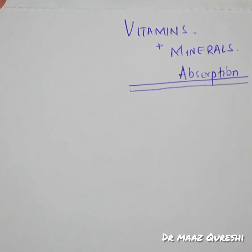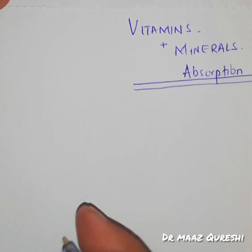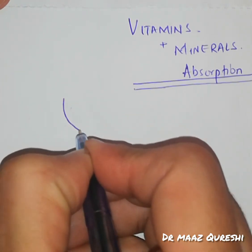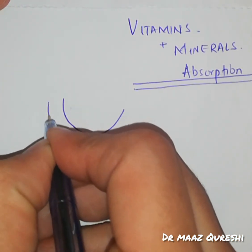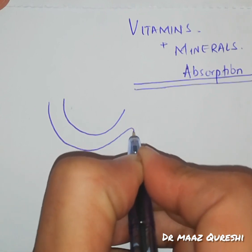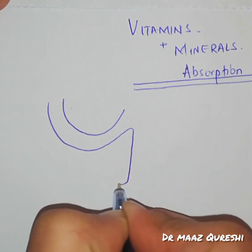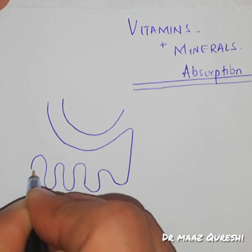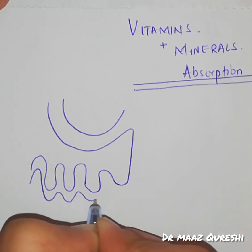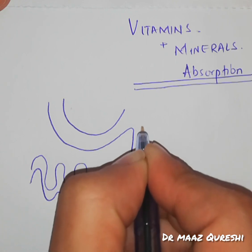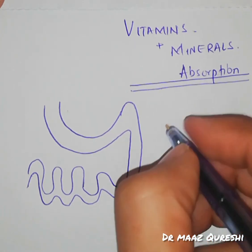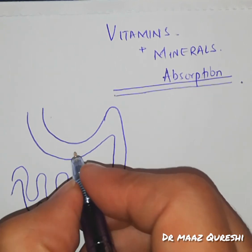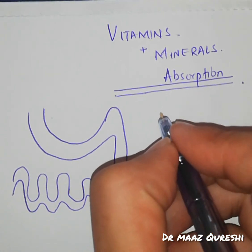Let's make a rough diagram of the GIT. This is the C-shaped duodenum — first, second, and third parts. Then this is the jejunum, and here we have the ileum. We will not be talking about the large intestine. On the left side, I'll be mentioning the name of each part of the GIT.